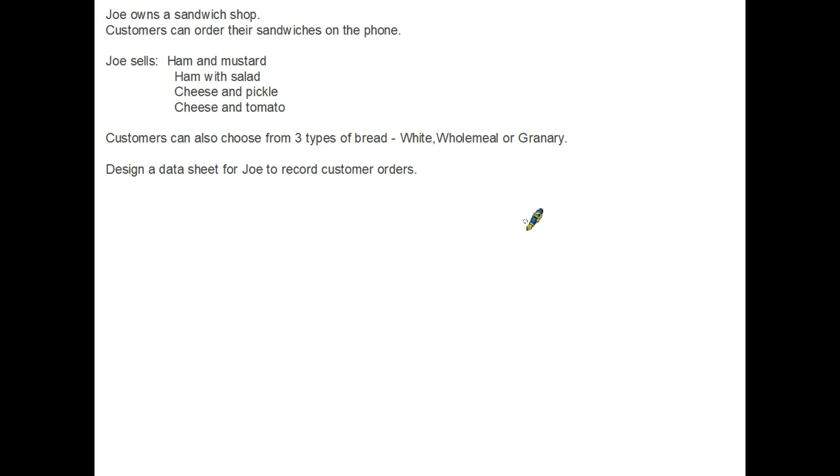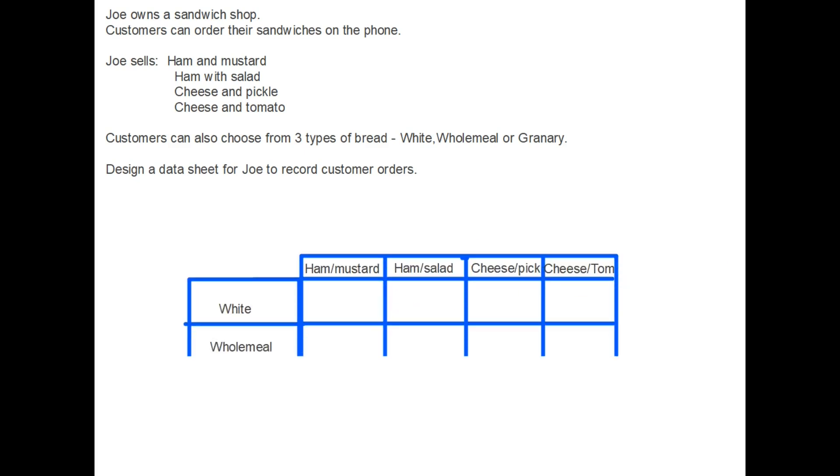What you need to finish up with in a question like this is a table whereby Joe can fill in simply the list of customer orders. Now here is one possible, maybe the simplest solution. It does not mean that it's the only solution. So what I've designed here is a two-way table. We have information along the top, type of sandwich. We have information down the side, the type of bread. What I have done is left all the boxes in the middle empty because the question doesn't give us any numbers. It is asking us to design a data sheet for Joe to record the orders.